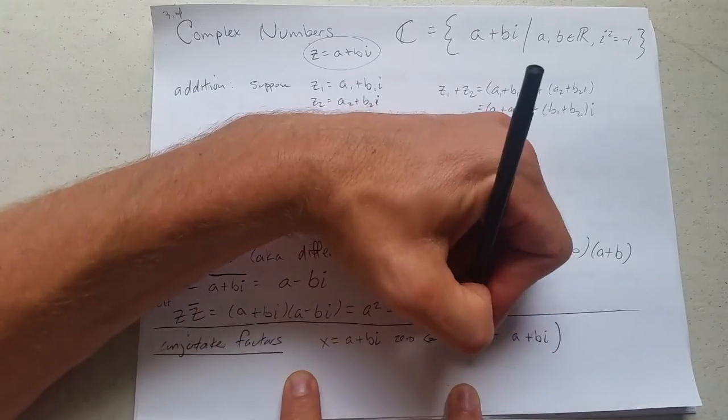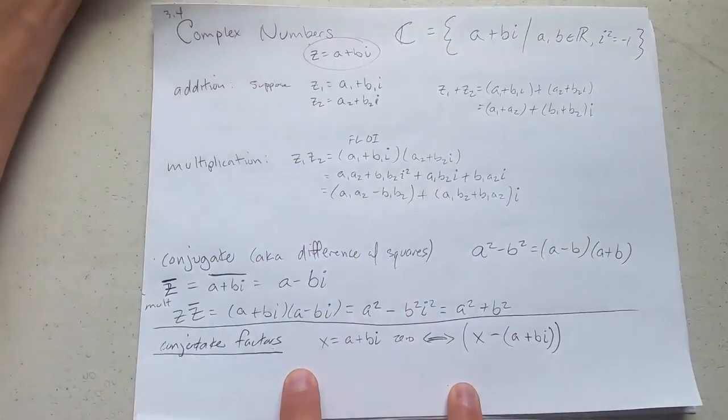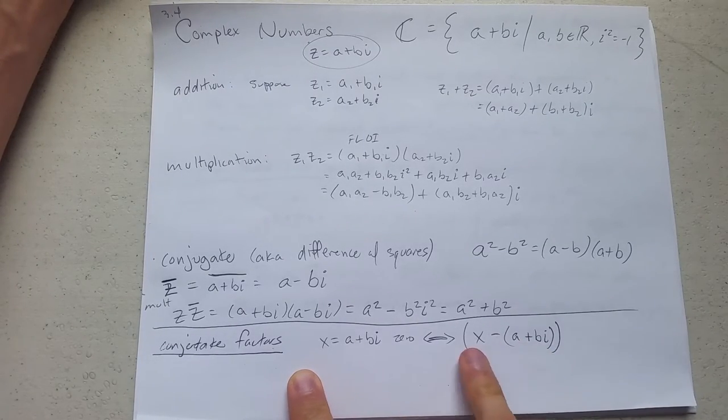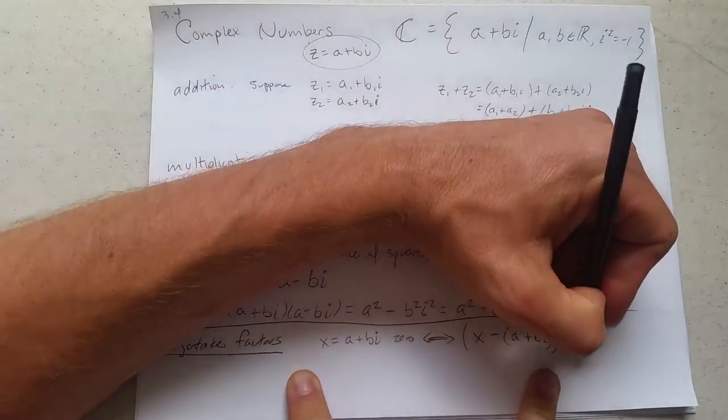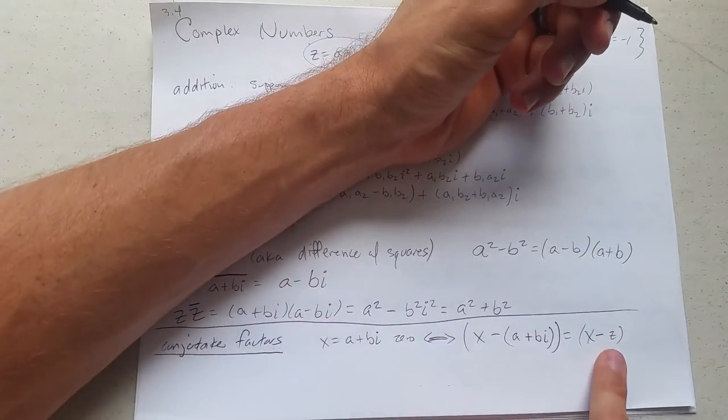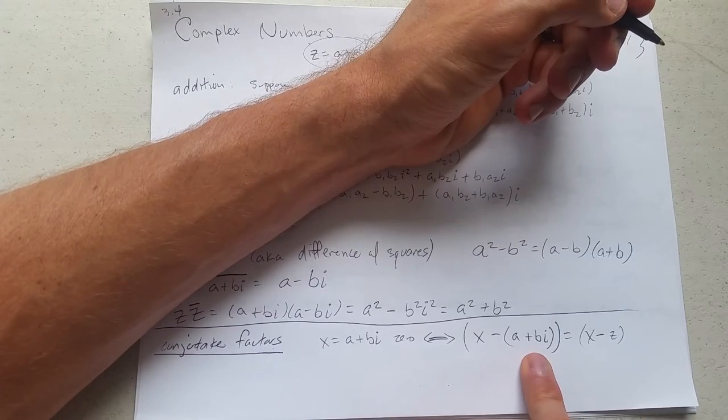It's very tempting to write it like this. What you need to do is make sure you subtract a plus bi. So it's x minus a plus bi, or you could just think of it as x minus whatever that number z was. So x minus z is x minus whatever that complex number z was.